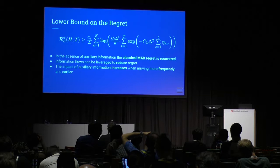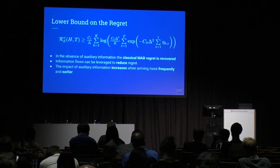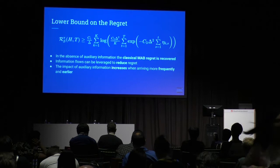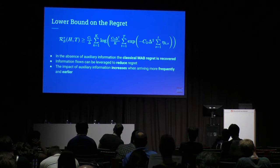If there are no auxiliary information arrivals, one recovers classical regret rates. Nevertheless, the existence of information flows can be leveraged to improve regret rates. The impact of auxiliary information increases when it arrives more frequently and earlier.